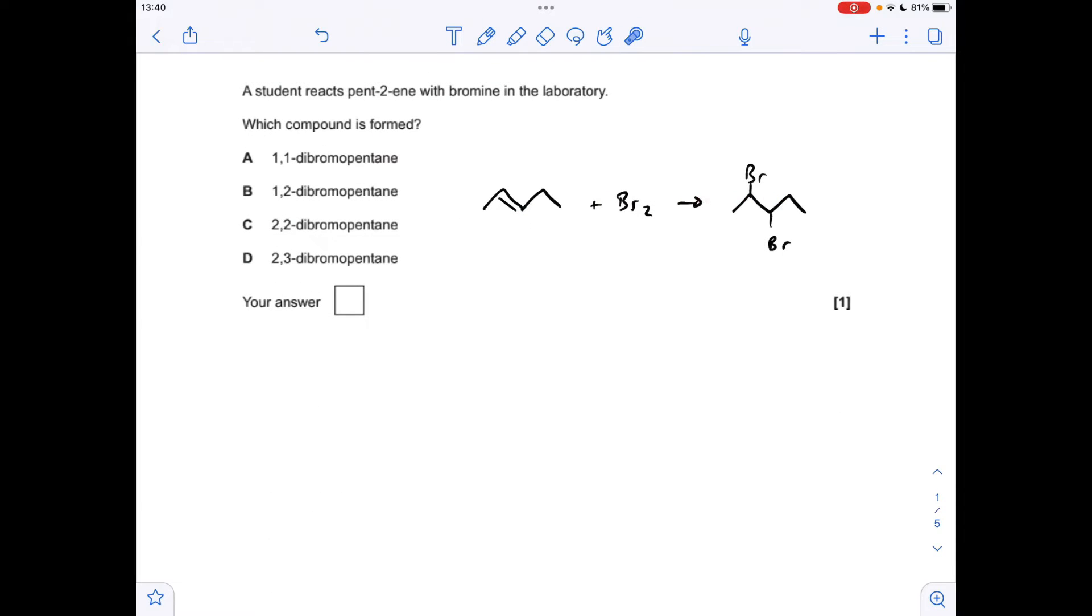So there's the reaction equation for the reaction of pent-2-ene with bromine. So what's the name of this molecule here? It's 2,3-dibromopentane, so option D.